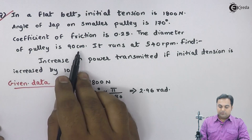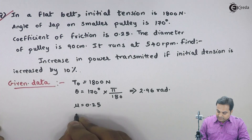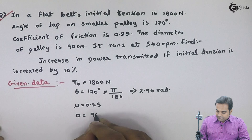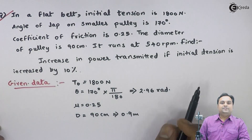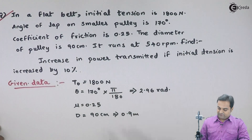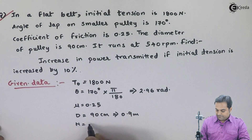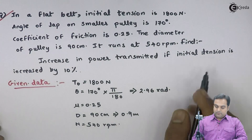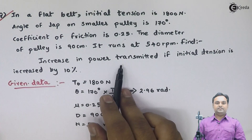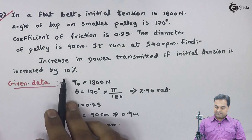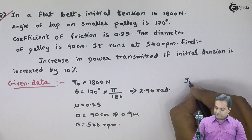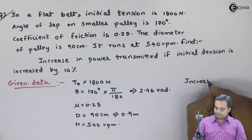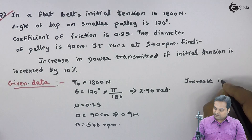The diameter of the pulley is 90 centimeter, so d is equal to 0.9 meters. It runs at 540 rpm. The question is to find the increase in power transmitted if the initial tension is increased by 10%.